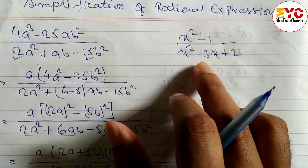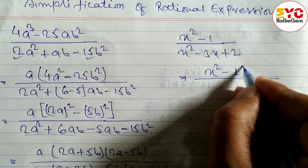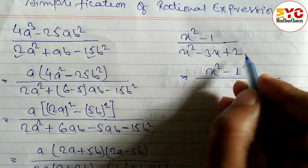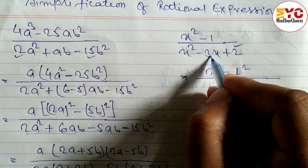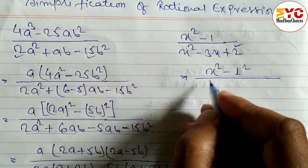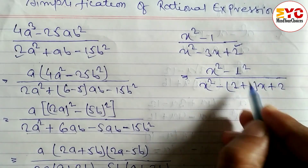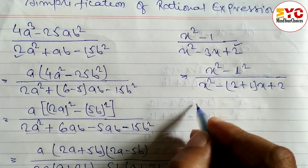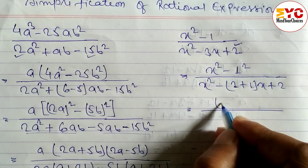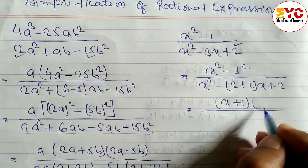Look at the next question: x²−1 by x²−3x+2. First we convert x²−1 into a²−b² form: x²−1². For the denominator, we factorize: while multiplying 2 and adding 3, the factors are 2 and 1. So write x²−2x−1x+2. Using the a²−b² formula for the numerator: a+b × a−b, with a=x and b=1, gives (x+1)(x−1).